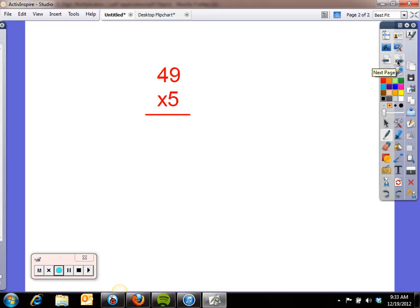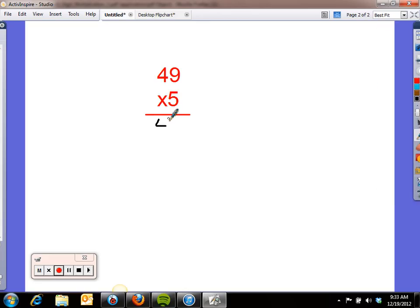This is 49 times 5. So again, I'm going to start with 5 times 9, which is 45. 5 times 4, wait a second, that's not a 4, that's actually 40. 5 times 40 is 200.